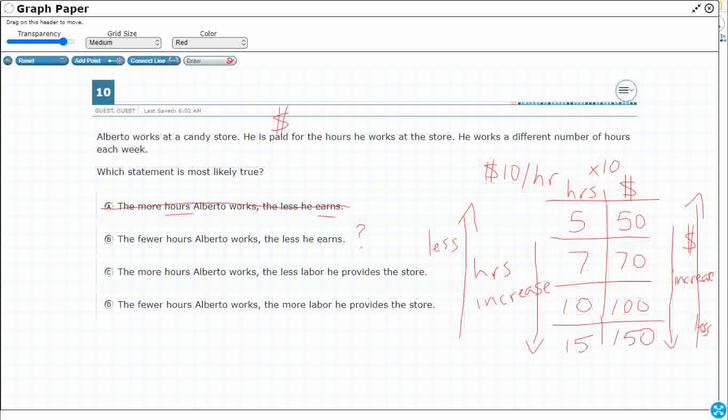C, the more hours Alberto works, the less labor he provides. No, labor is work. Labor is you working. Those two are equal. So the more hours that he works, the more labor he's going to provide. So C is incorrect. The fewer hours that Alberto works, the more labor he provides. No, labor is the same as working. That's exactly a good definition for it. So you can't have fewer hours he working, meaning he gives you more labor. So it is going to be B.